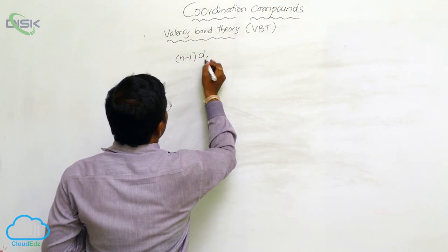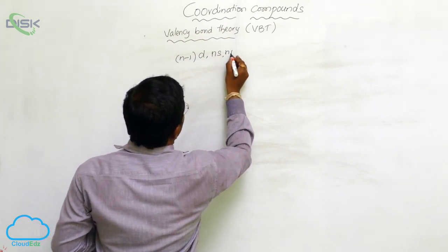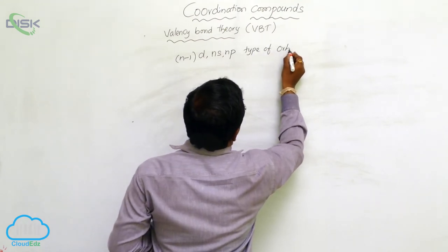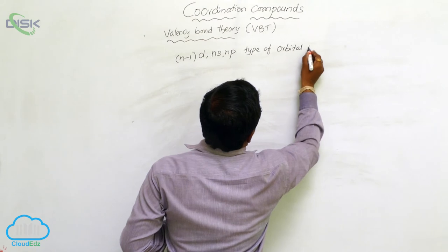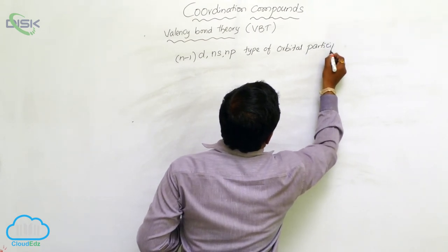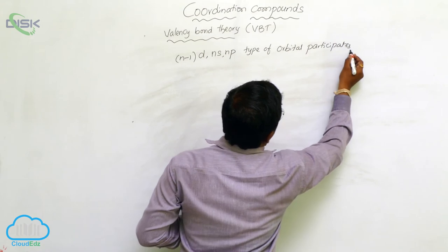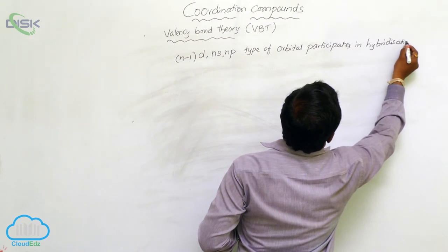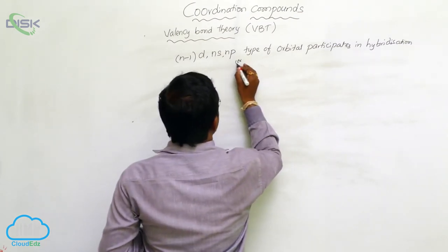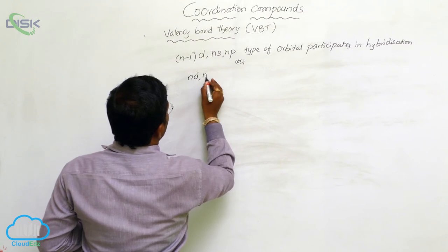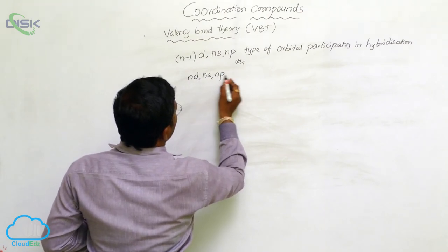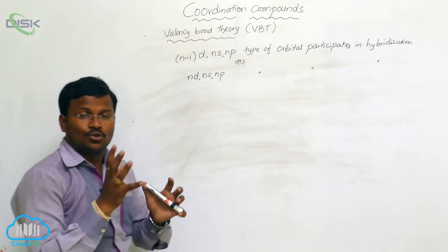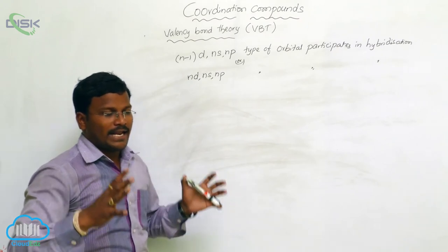Which type of orbitals present in the metal atom participate in hybridization? Either (n-1)d, ns, np type of orbitals participate in hybridization, or sometimes nd, ns, np type of orbitals also participate in hybridization. This means there are two types of possibilities when a ligand approaches the metal complex.